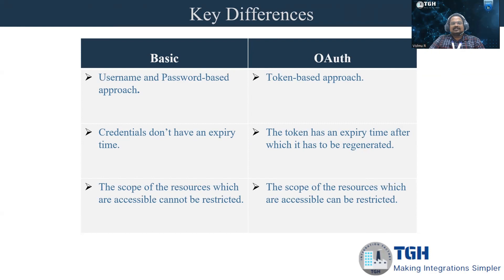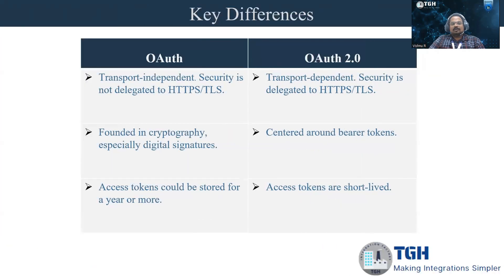Now let us look at OAuth versus OAuth 2.0. OAuth is transport independent — security is not delegated to HTTPS or TLS. But OAuth 2.0 is transport dependent, and the security is delegated to HTTPS or TLS. OAuth is founded in cryptography, especially digital signatures, whereas OAuth 2.0 is centered around bearer tokens. OAuth access tokens could be stored for more than a year, whereas OAuth 2.0 access tokens are short-lived.